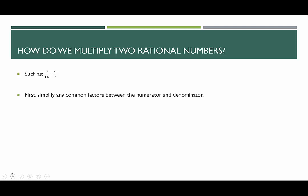We're looking for common factors between any factor of the numerator and any factor of the denominator. Here 3 and 9 are both divisible by 3, so we divide them each by 3. Then we do the same thing with 7 and 14, which are both divisible by 7.